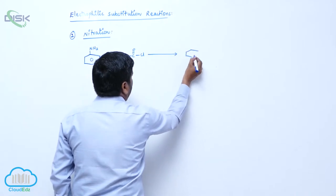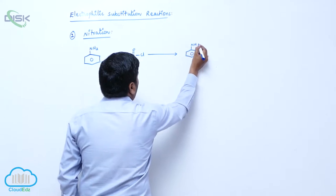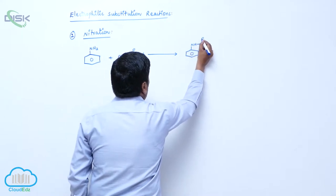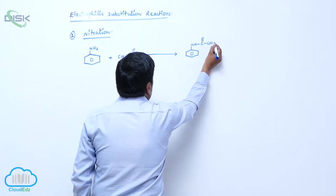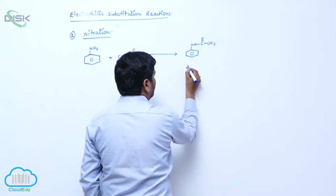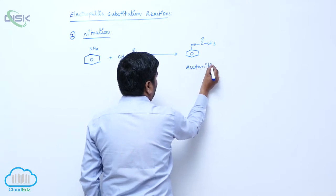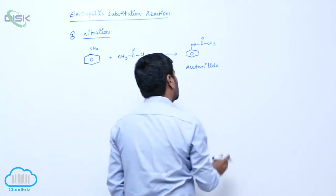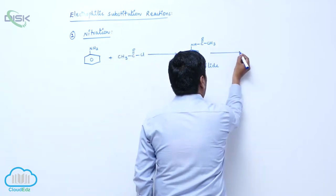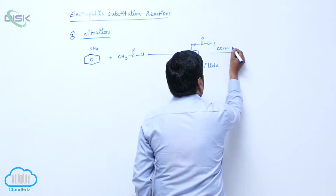to form NH-C double bond OCH3. This is known as acetylchloride. This acetylchloride reacts with concentrated HNO3.